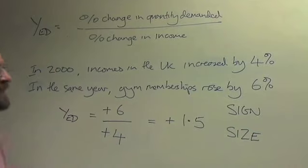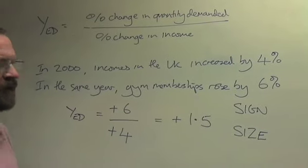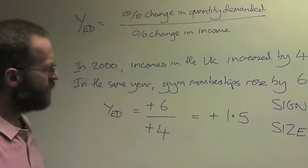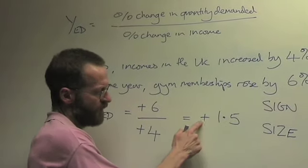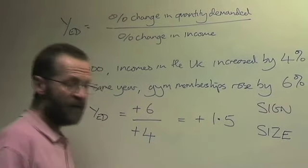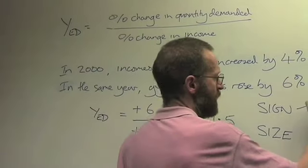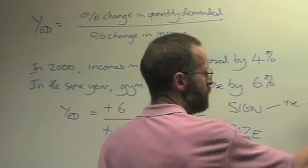When you're looking at income elasticity of demand, the sign can be either positive or negative. In this case, we've got a positive number. If it's a positive number, it means that the product is a normal good.